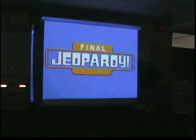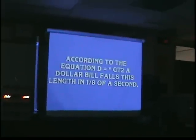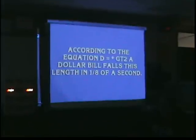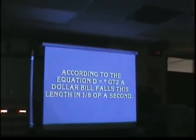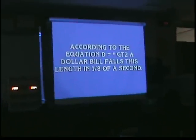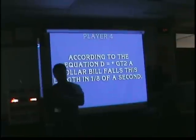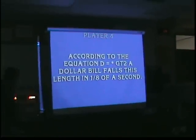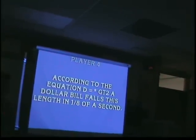Final Jeopardy! Today's final Jeopardy category — write down what your scores are on a piece of paper. Player four, do you know the answer to this? No. Player six, do you know this? Player six — one half is correct! One half GT squared — they win!